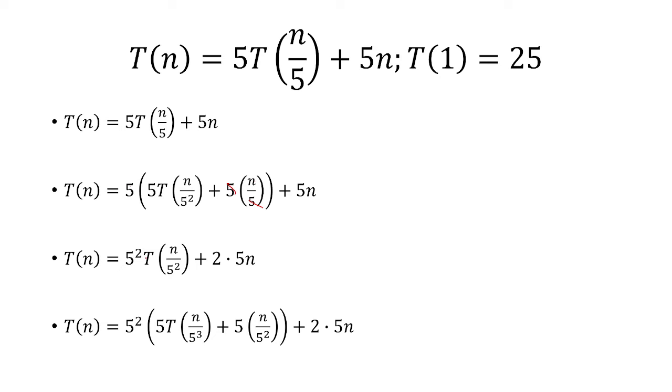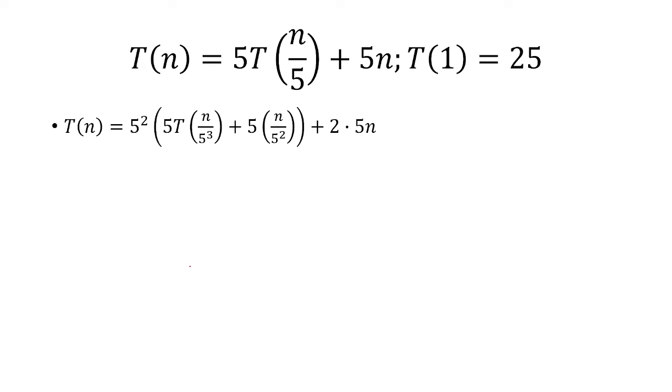So we just repeat the process and now we plug in n over 5 squared in for n here to get 5 cubed times T of n over 5 cubed plus 3 times 5 to the n.